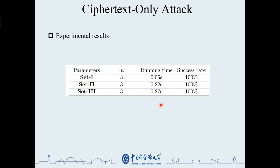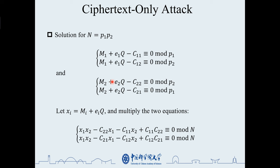The method of attack is described below. There are four equations. Let xi equal mi plus eiq. Multiply this by this, and this by this. They both hold for modulo n.